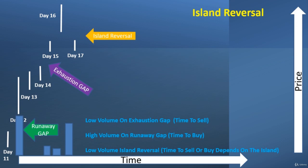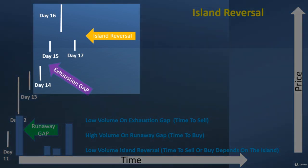Sometimes what happens with the island reversal is you have an exhaustion gap that is immediately followed by a big jump up in price that looks like another runaway gap. The classic way to define it would be the next day as a true island reversal, though sometimes folks will say you might have one or two trading periods in between. But really the classic way to look at it is, like in this example, between days 15 and 16, you're going to have these two back-to-back gaps.